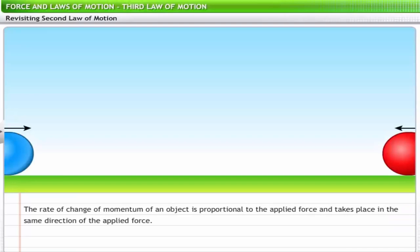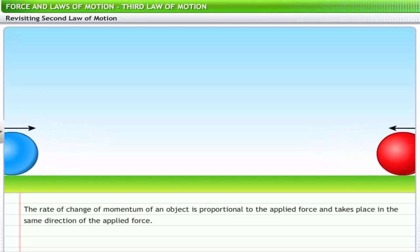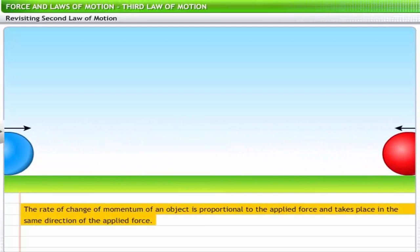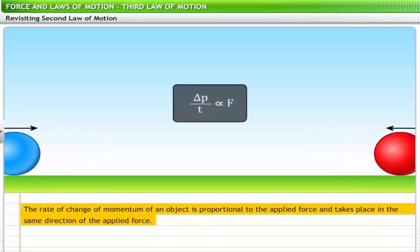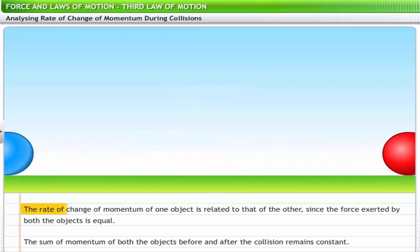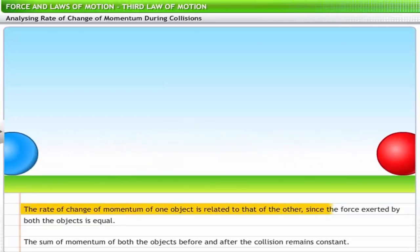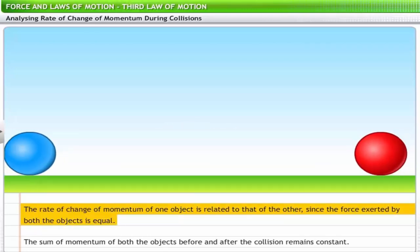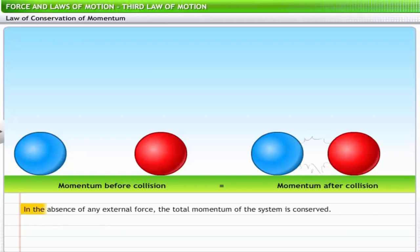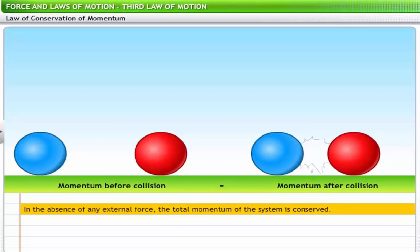In the third law of motion you see two equal forces acting simultaneously against each other on two objects when an event such as collision occurs. According to the second law, the rate of change of momentum of one object is related to that of the other since the force exerted by both objects is equal. However, the sum of the momentum of both objects before and after the collision remains constant. Hence in the absence of any external force, the total momentum of the system is conserved — this is known as the law of conservation of momentum.